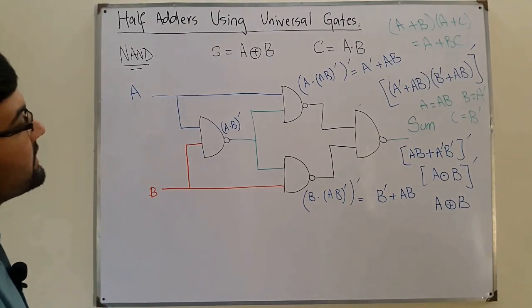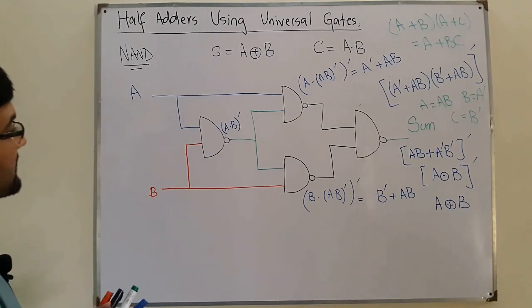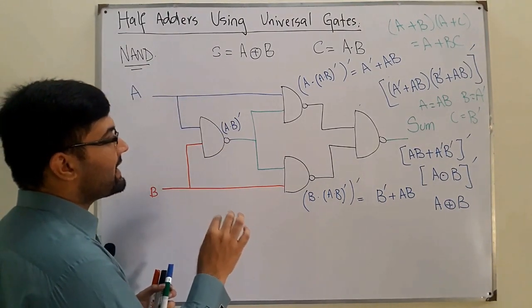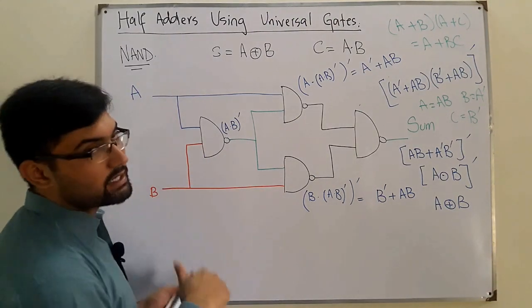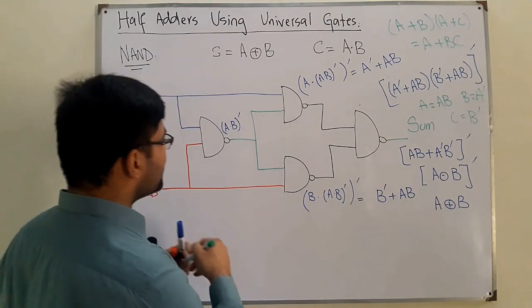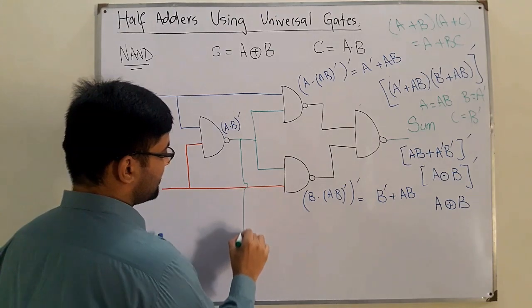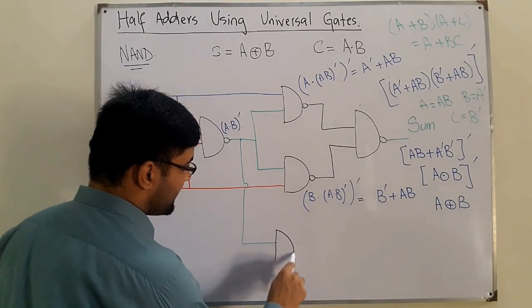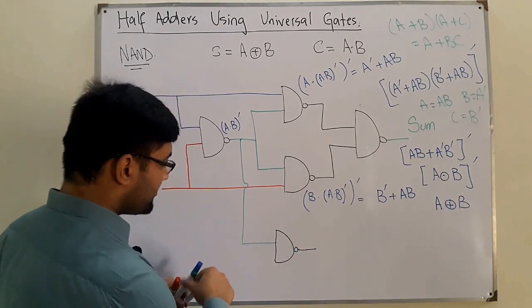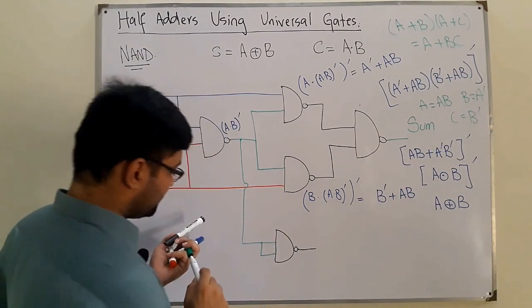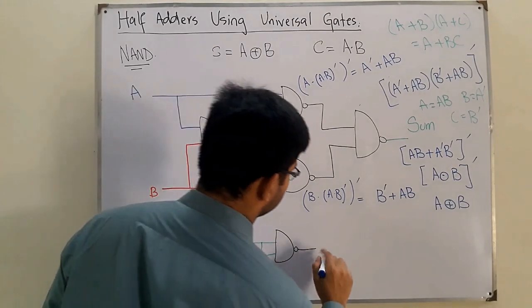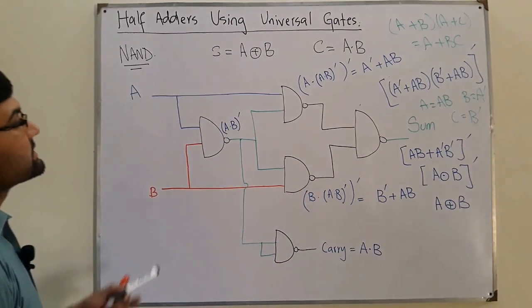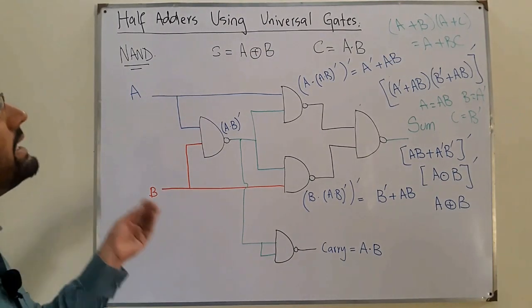which is the sum. For the carry, we know it's A·B. We have (A·B)' from gate one. If we invert (A·B)', we get A·B. A NAND gate with both inputs tied together acts as a NOT gate, so we give the output of gate one to this gate with the same input on both terminals, and we obtain the carry, which is A·B.